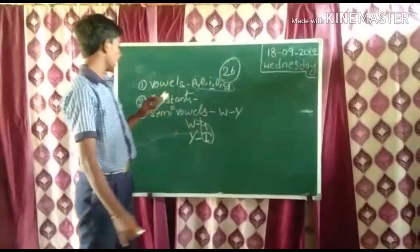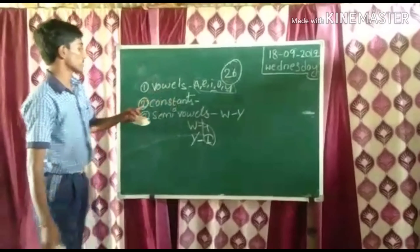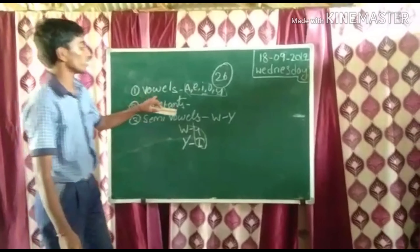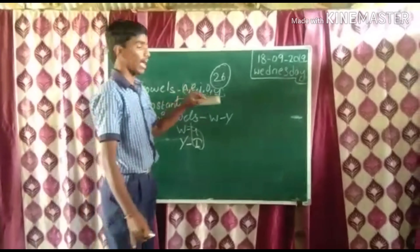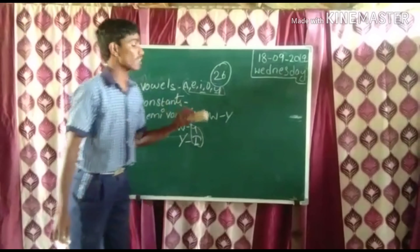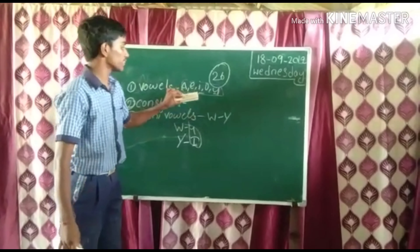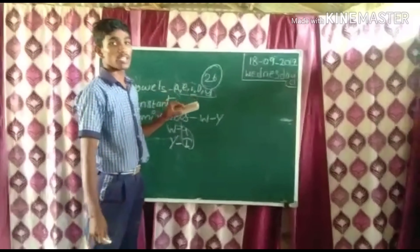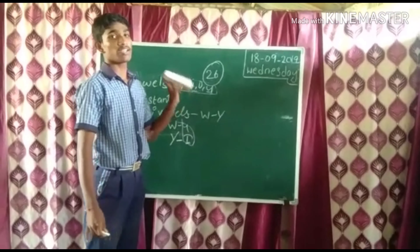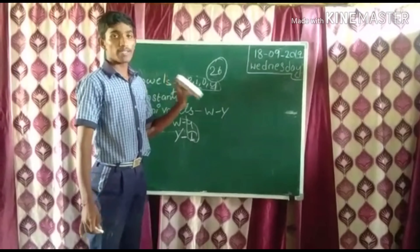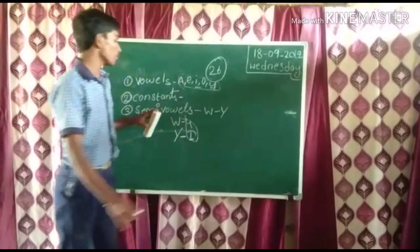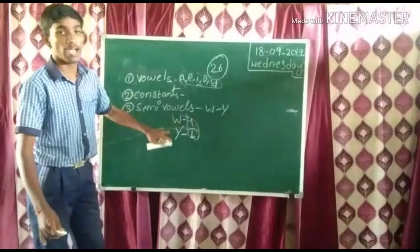Now you understand — alphabets are 3 types: vowels, consonants, and semi-vowels. Vowels means A, E, I, O, U. Consonants means except these 5 vowels, all remaining 21 alphabets are called consonants. And semi-vowels means W and Y.